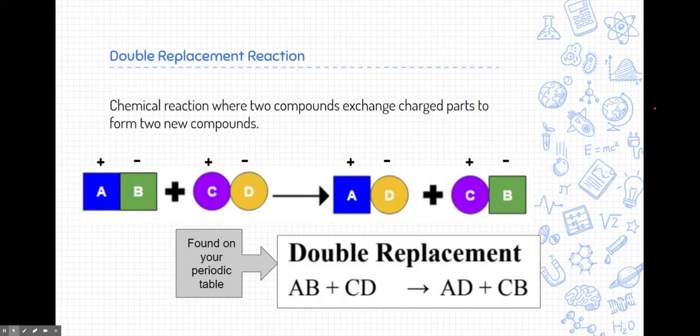A double replacement reaction is just a reaction where two compounds exchange their charged parts to form two new compounds. Here's an example of a compound, a very generalized form, made of an A substance and a B substance. Notice that their charges are positive attached to a negative. Likewise, here's another compound made from C and D with a positive and negative charge, and that's how ionic compounds attach to each other.